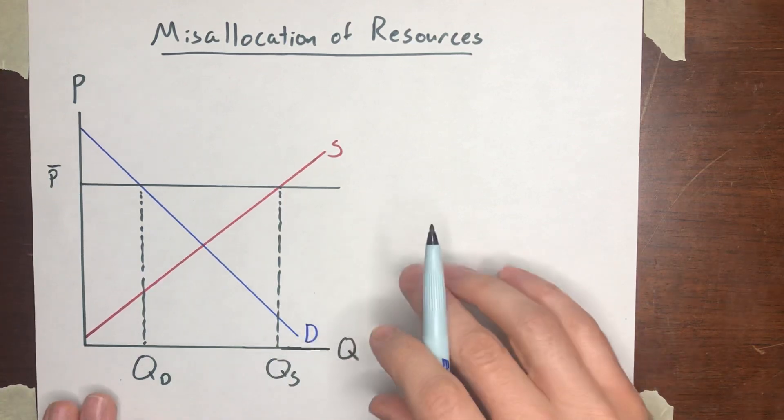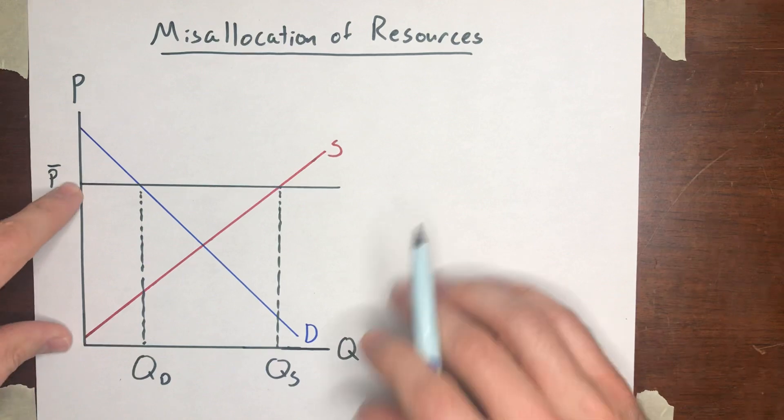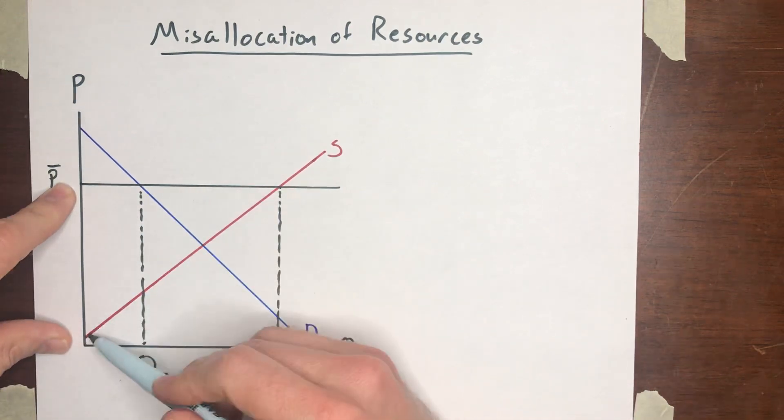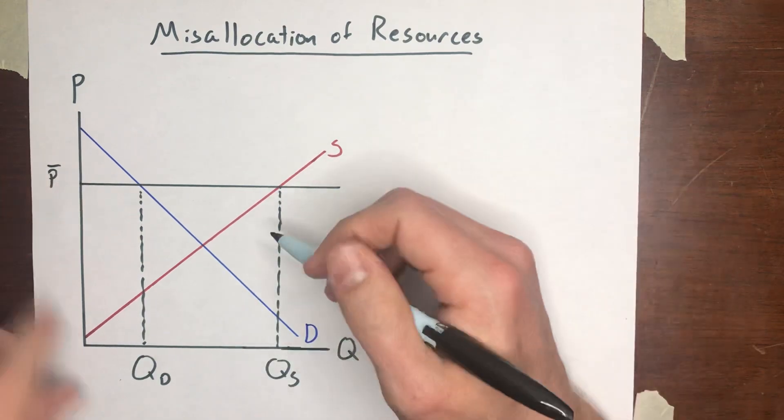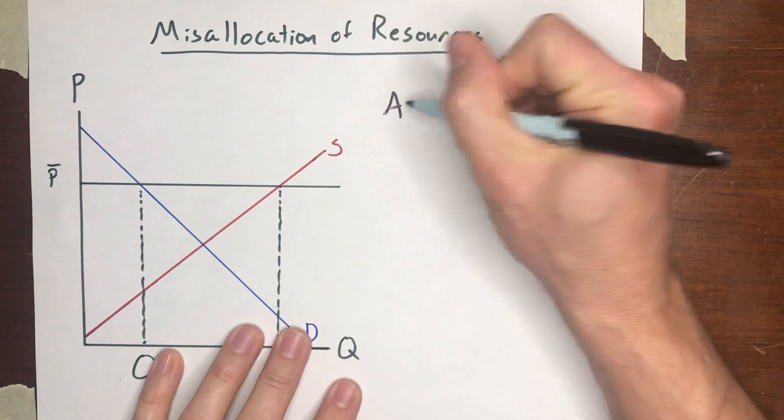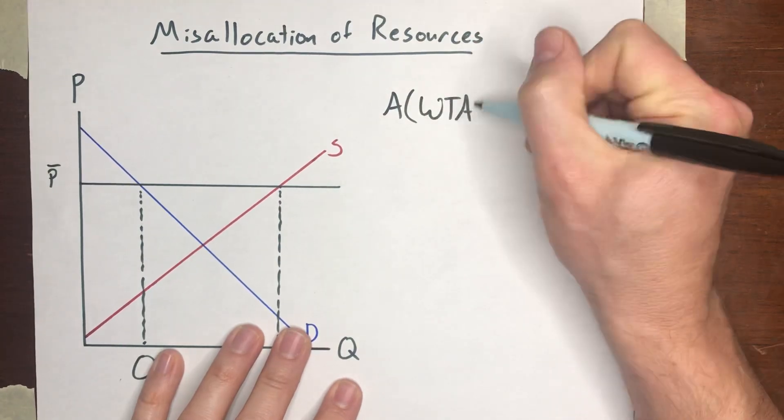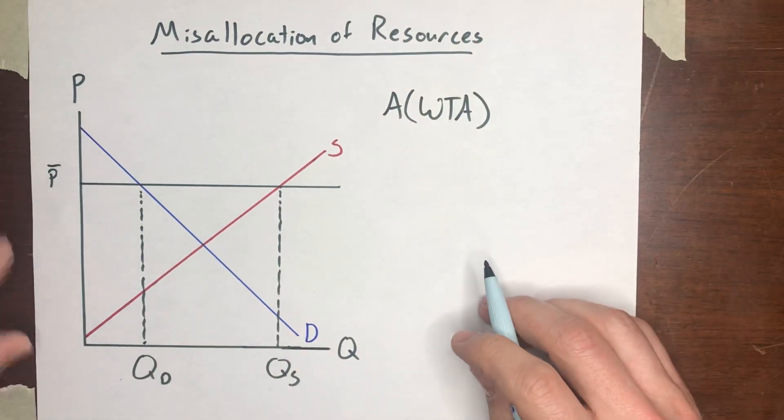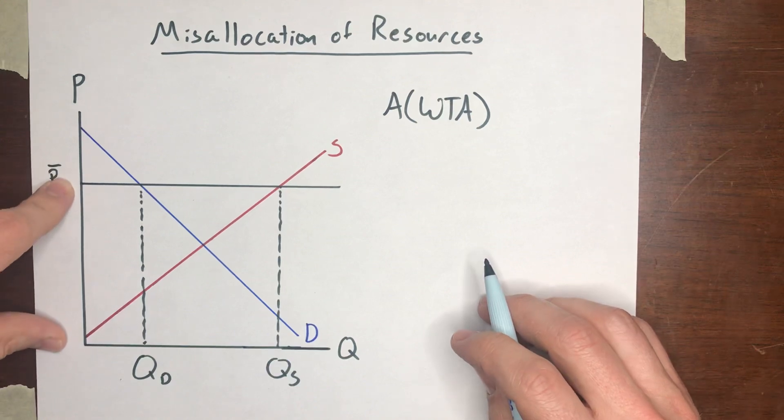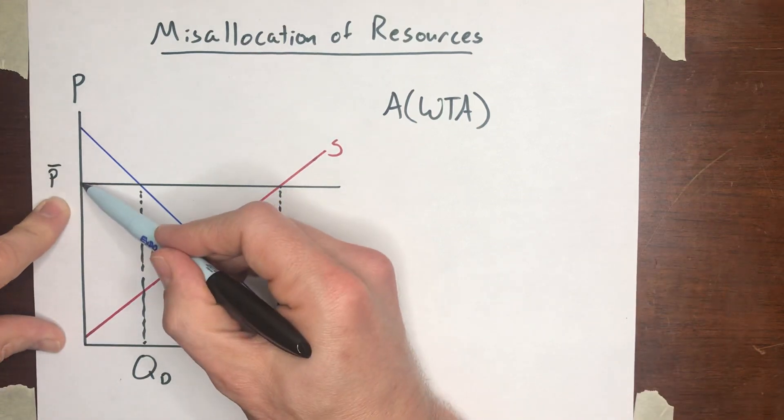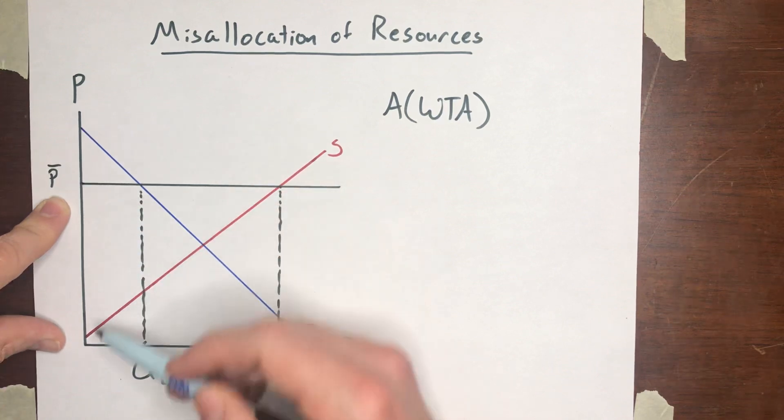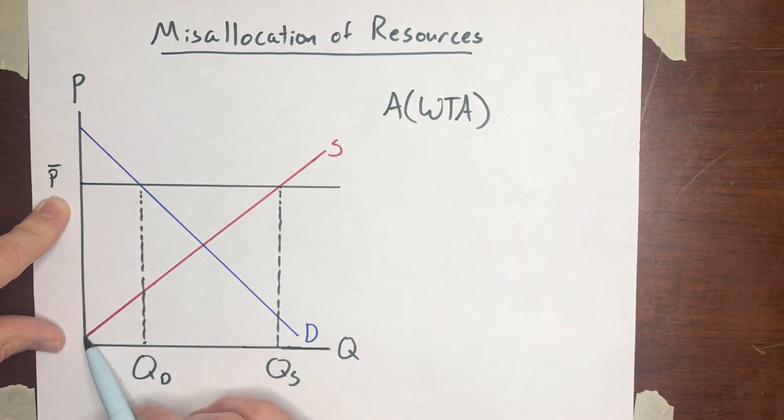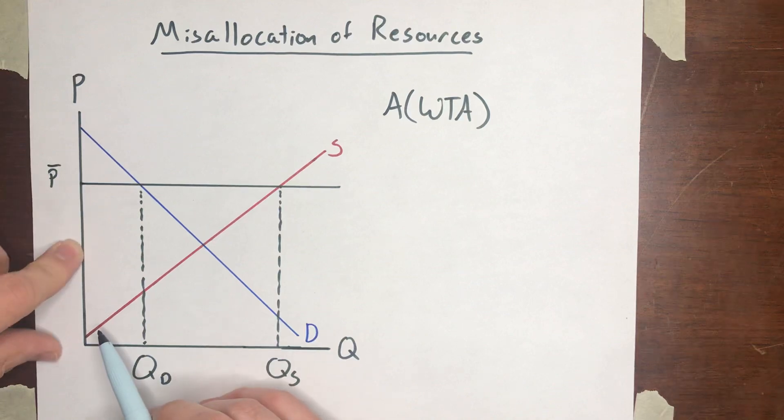So what is it that we're interested in? It's going to be what is the average willingness to accept of these sellers. And what that number is going to be, let's call it average willingness to accept. The formula to calculate that is going to basically be finding the midpoint between the price that you can sell the good at and the y-intercept of the supply curve. Find that midpoint.